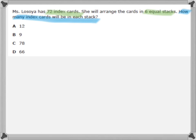Alright, so again, I see that I'm arranging something into equal groups, so I'm going to go to my G-E-T strategy. Do I know how many groups I have? Well, there are six equal stacks — six equal groups. Do I know how much is in each stack? Actually, I do not. The question is asking us how many index cards will be in each stack, so we do not know that.